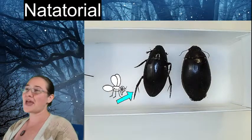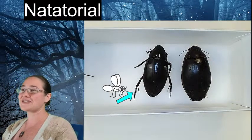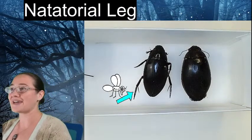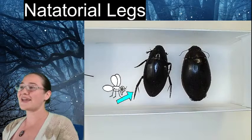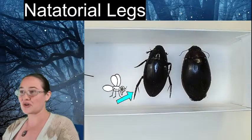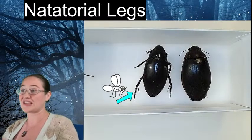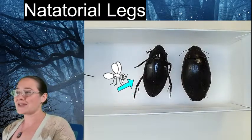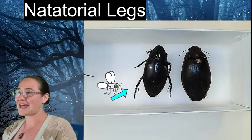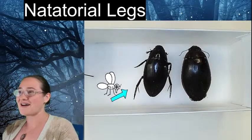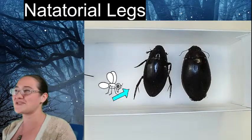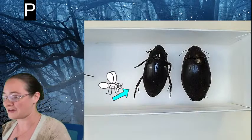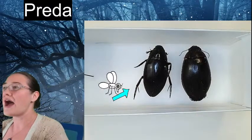That's actually going to be a new word for us today: natatorial. Natatorial legs are the legs that insects use to swim. On the hind legs they've got these long hairs — they kind of use them like paddles — and we'll be able to see that a little later.